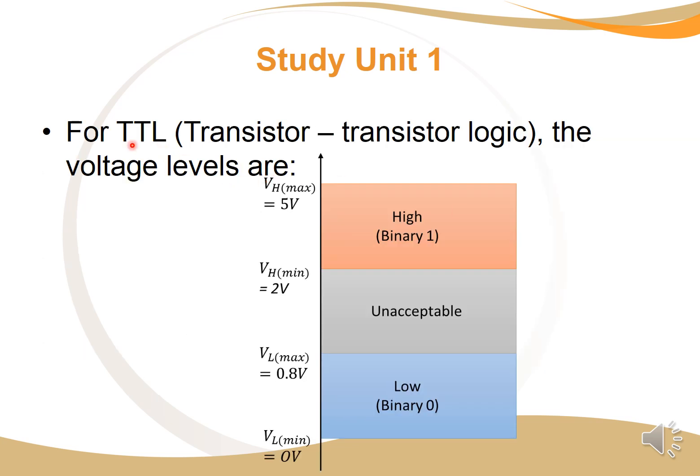As an example, in this course we're using TTL or transistor-to-transistor logic. For that, the voltage levels are, for the low condition, between 0 and 0.8 volts. Between these two values, the circuit will recognize a low. And between 2 volts and 5 volts, the circuit will recognize a high. If the value is between 0.8 and 2 volts, it will be in an unacceptable, uncertain condition.